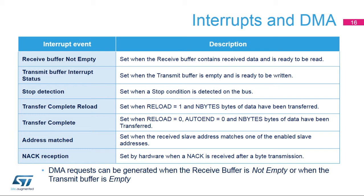Several events can trigger an interrupt. The receive buffer not empty flag is set when the receive buffer contains received data and is ready to be read. The transmit buffer interrupt status is set when the transmit buffer is empty and is ready to be written. The stop detection flag is set when a stop condition is detected on the bus. The transfer complete reload flag is set when the reload bit is set and nbytes bytes of data have been transferred. The transfer complete flag is set when the reload and auto end bits are cleared and nbytes bytes of data have been transferred. The address match flag is set when the received slave address matches one of the enabled slave addresses. The NACK reception flag is set when a not acknowledge is received after a byte transmission. DMA requests can be generated when the receive buffer not empty or transmit buffer empty flag is set.